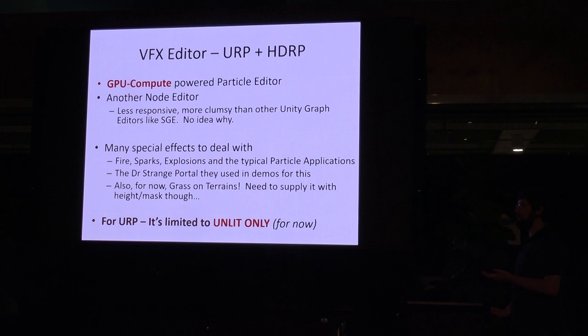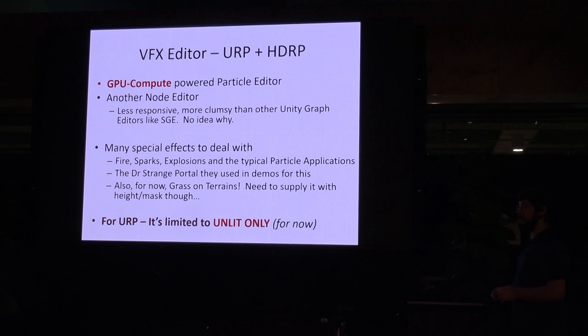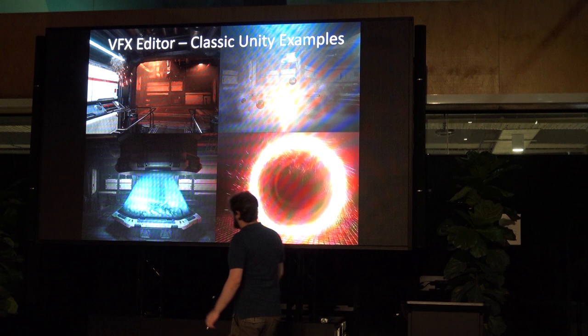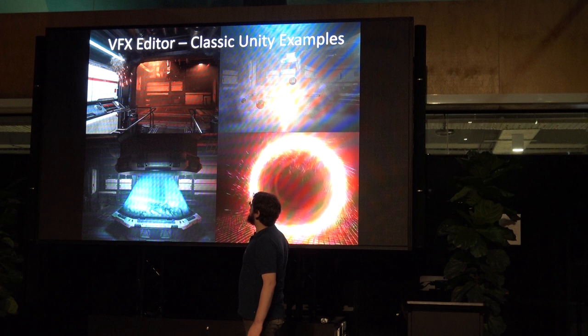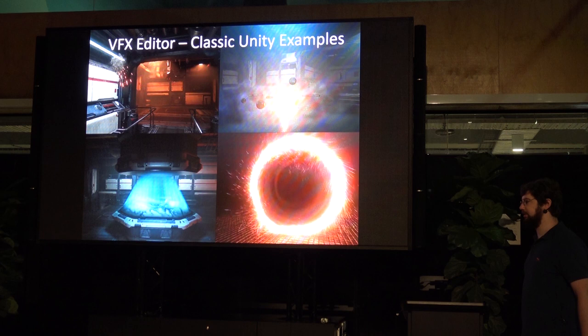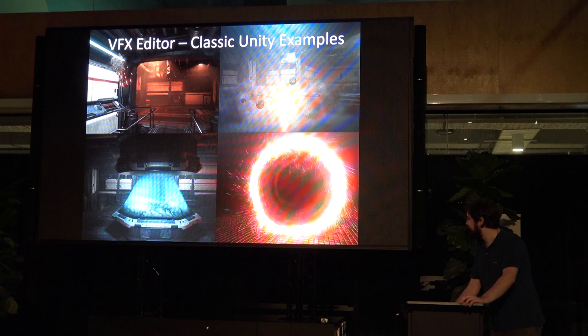It's a particle effects system, so you want to use this for fires, sparks, explosions. They did a Doctor Strange style portal in many demos. One of the new examples is actually grass for terrains, because for a long time the High Definition Render Pipeline didn't have native grass working. Unity has posted example images showing exceptionally high particle counts with a lot of overdraw, but it actually runs dirt cheap. Very easy to color, very easy to use. The editor itself isn't massively responsive — it's the least polished of the node graph editors — but hopefully that'll change in the short term.